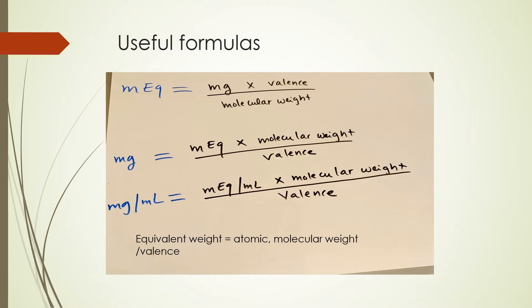You can also be asked to find milligram when you're given the milliequivalent. So the way you do it is milligram equals milliequivalent times molecular weight divided by valence. And the third one is if you're being asked to find milligram per mL, when you're given milliequivalent per mL, you can also find milliequivalent per mL.